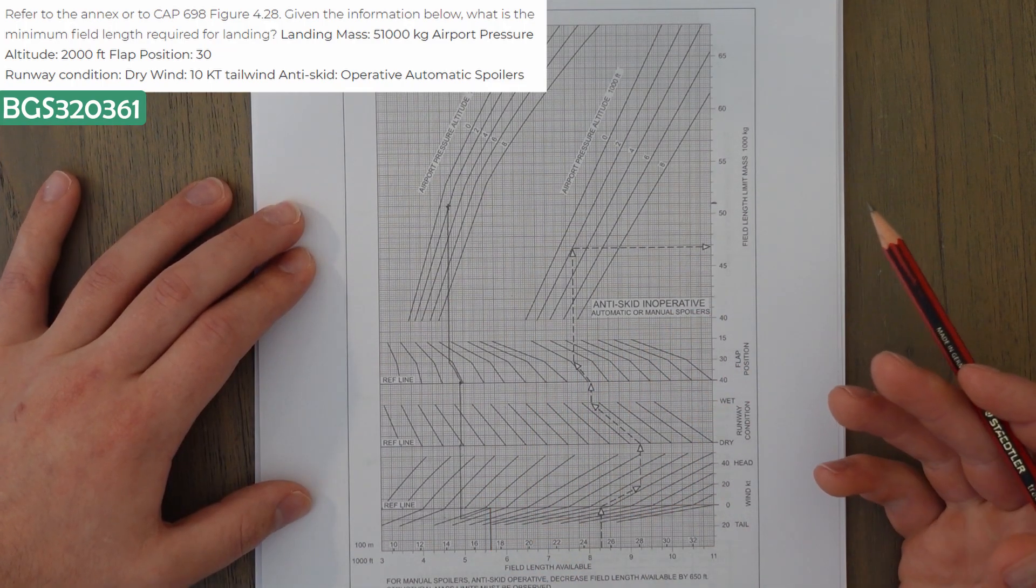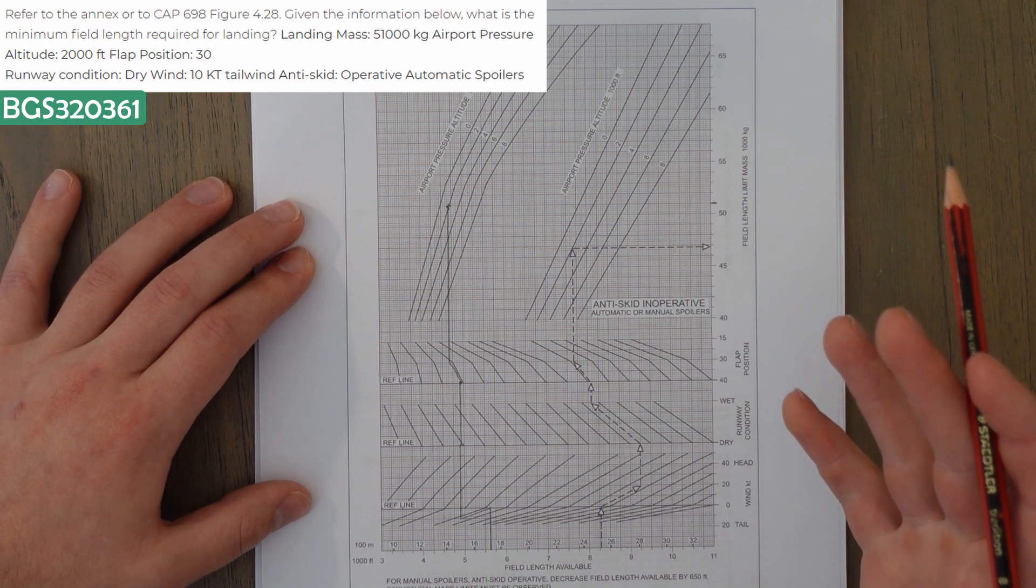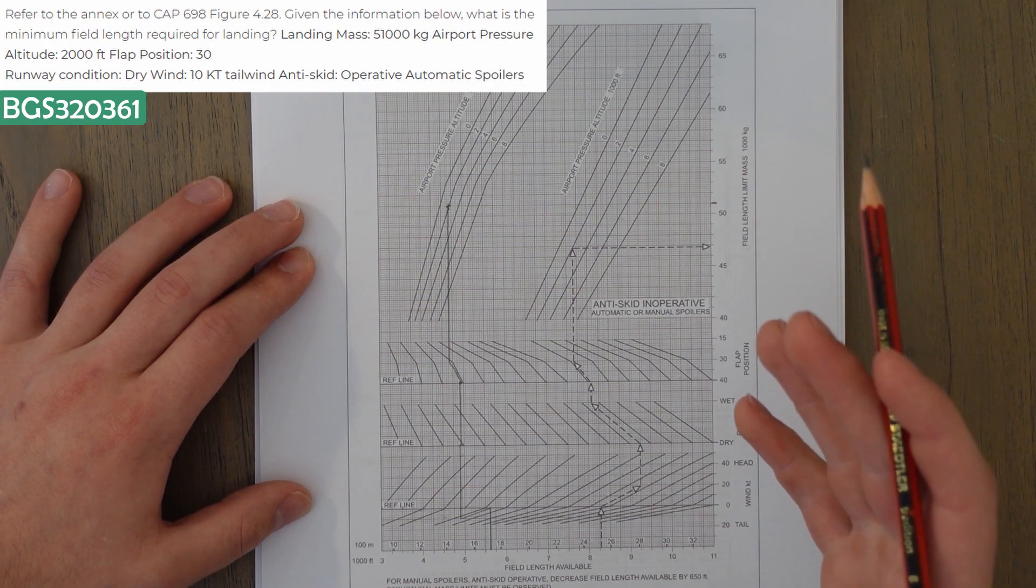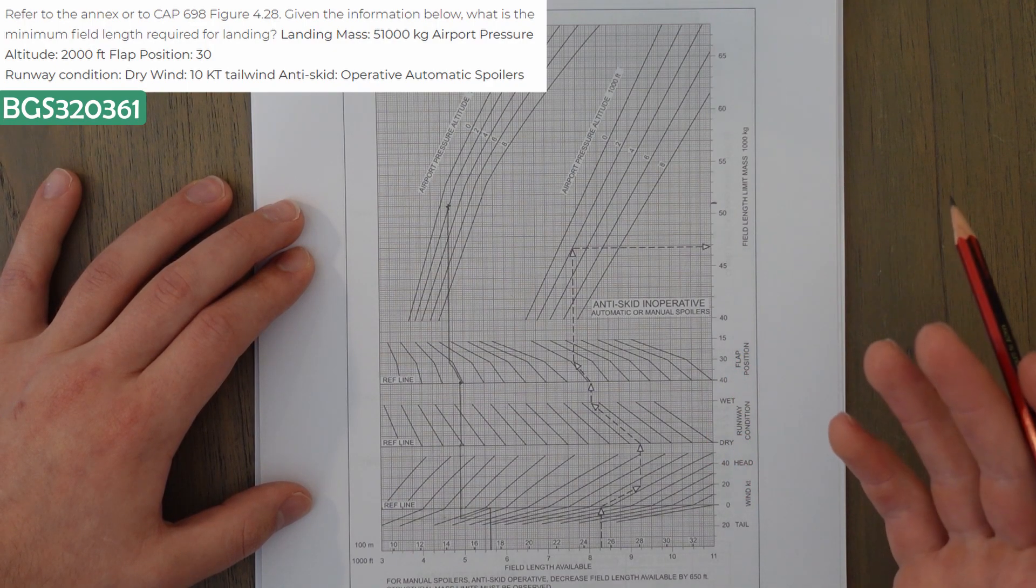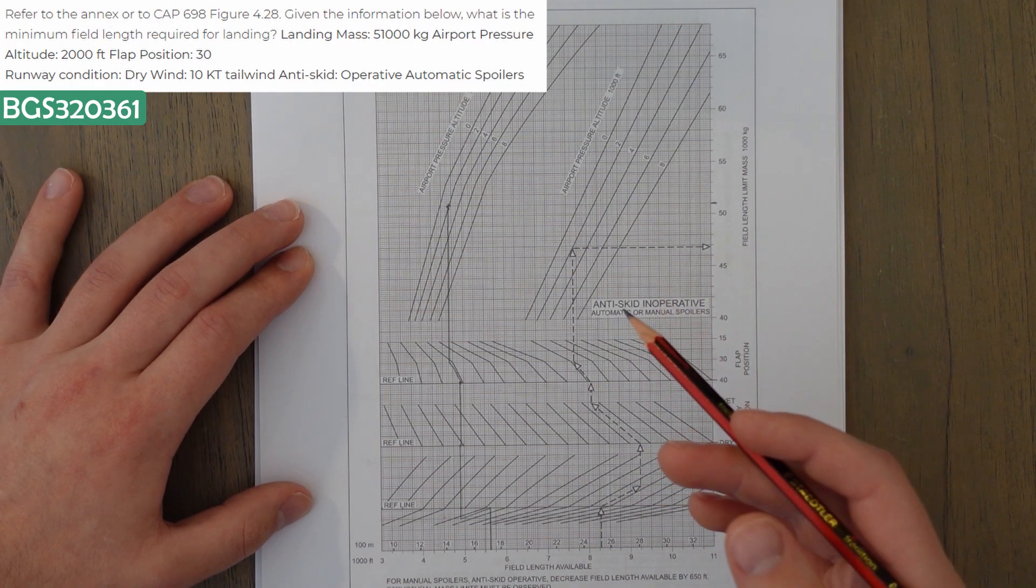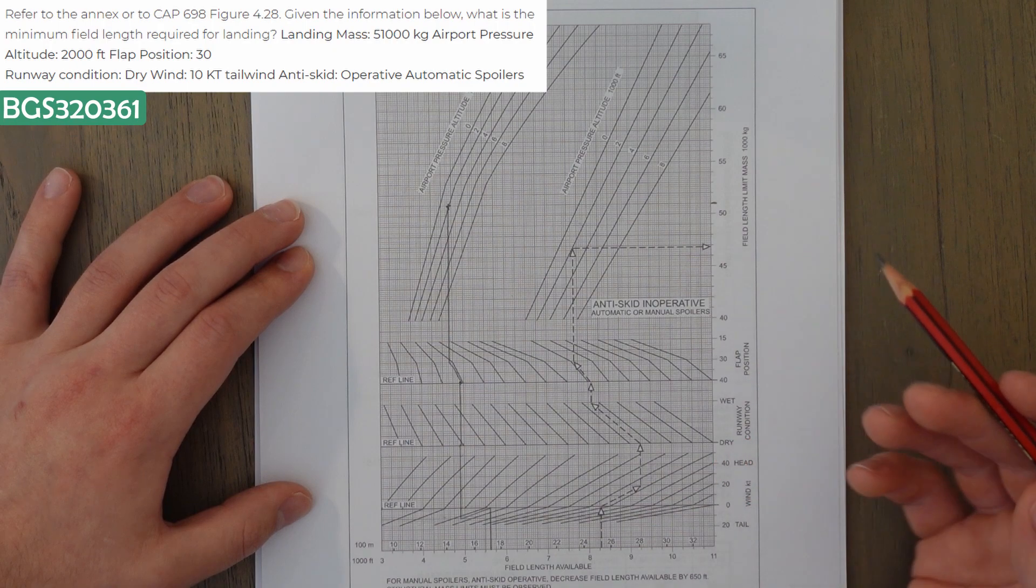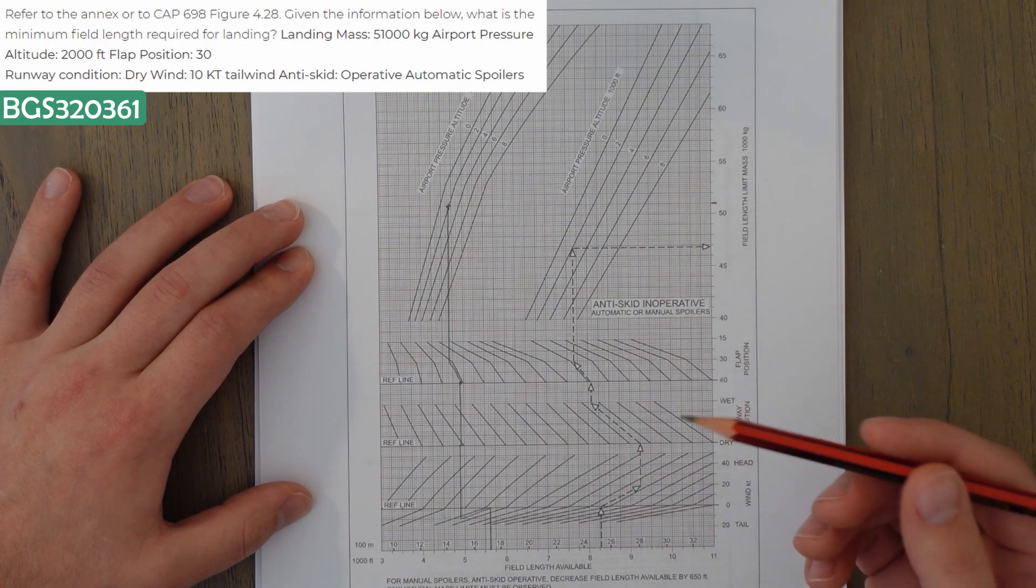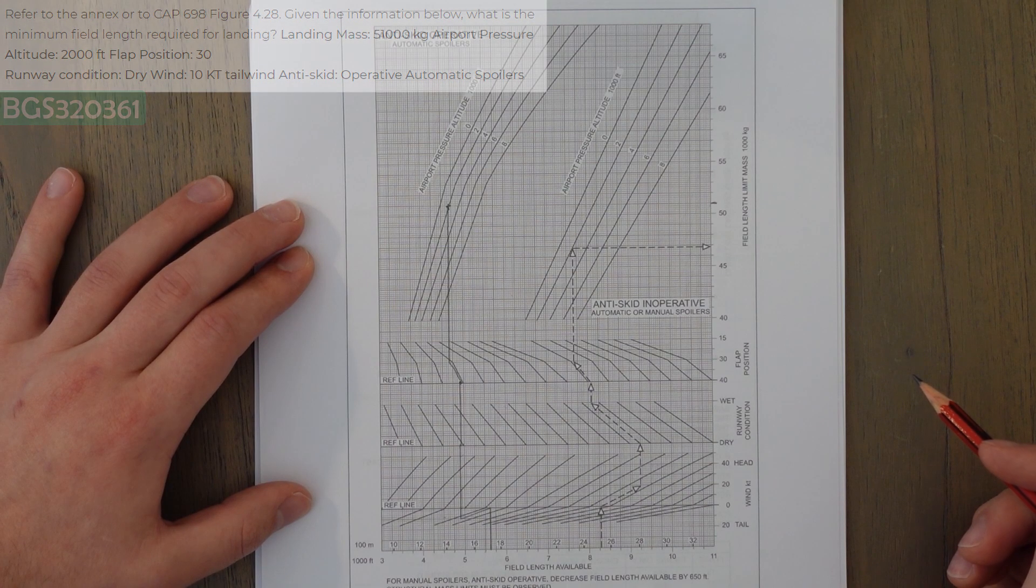The answers available in the question were 9,950, 3,800, 5,725, and 6,250. So we picked the closest one, which is obviously 5,725 feet for some nice easy marks.